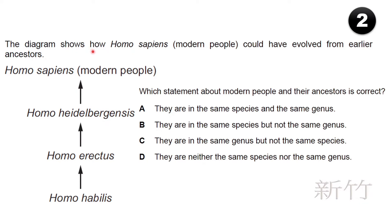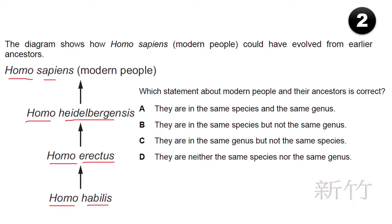The diagram shows how Homo sapiens (modern people) could have evolved from earlier ancestors: Homo habilis, then Homo erectus, then Homo heidelbergensis, then Homo sapiens. Which statement about modern people and their ancestors is correct? If you look, all these organisms share the same genus 'Homo', but all their species names are totally different. So the answer is C: they are in the same genus but not the same species.